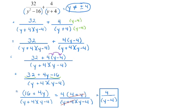The number one mistake people will make is canceling too early. When you do that, you notice you're left with what we originally started with. The whole point when we add or subtract is getting that common denominator and then actually adding or subtracting the numerator. So make sure that you do not cancel until the very end when we go to simplify.